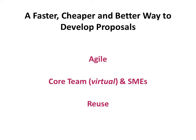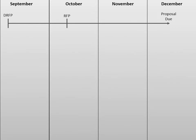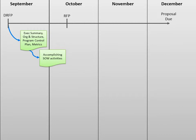I've applied each of these elements to create an example proposal development plan for a large technical services contract. Upon the release of the draft RFP, focus the initial iterations on the material that will have the most impact on the rest of the proposal, like the executive summary, organization and program leadership, control processes, and a high-level description of how we will implement the statement of work requirements.